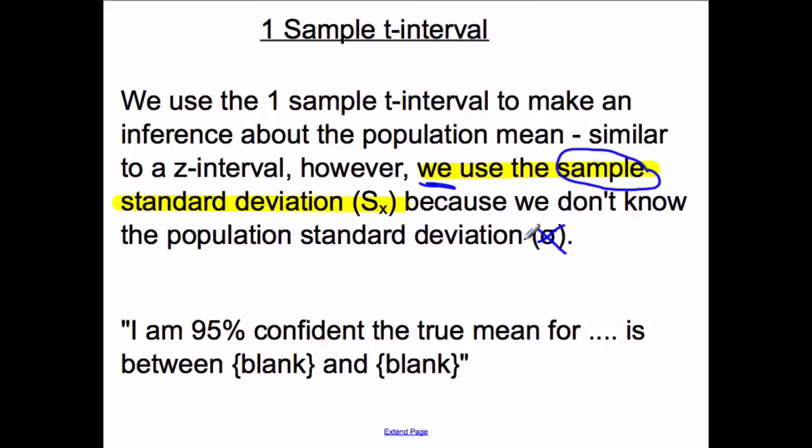We don't have the population standard deviation in the real world, so we are using our sample standard deviation to come up with our standard deviation and then we use a t-test. The conclusion will still come up the same. I am 95% confident the true mean for whatever the context of the problem is is between blank and blank, and that's whatever you found your interval to be.